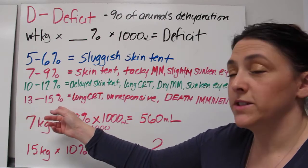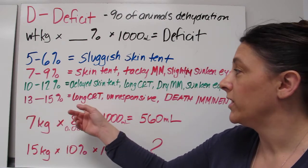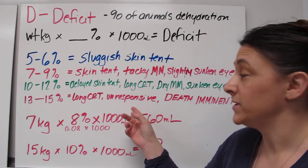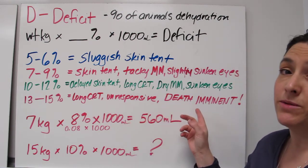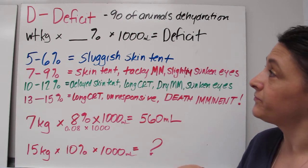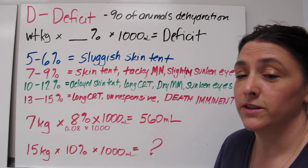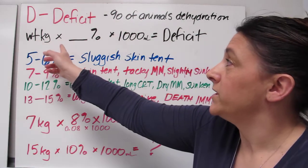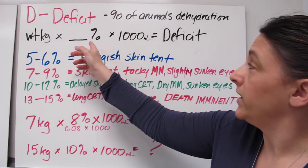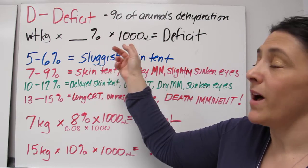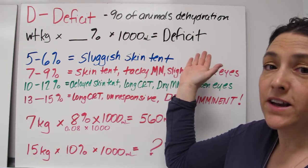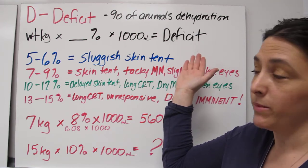At 13 to 15 percent dehydrated, again, a really long cap refill time. They come in unresponsive and you need to be aware that death is imminent. So how do we calculate this deficit? Well, we take their weight in kilograms. We times it by the percent that they are dehydrated and then we times that by 1,000 mLs and that will give us the deficit mLs that they need to be replaced.